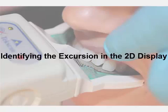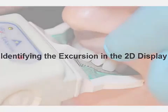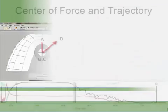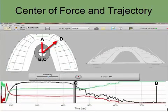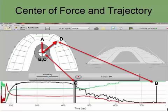The center of force trajectory can give the dentist an idea of whether or not the patient has good anterior guidance. The anterior guidance patterns begin at the C line and end at the D line of the graph.